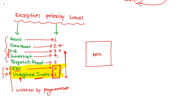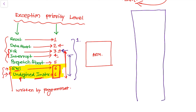Similarly, if FIQ occurs — which is priority 3 — if exceptions at priorities 3, 4, 5, and 6 occur simultaneously, the processor will serve priority 3 first. If every exception occurs simultaneously, the processor will serve the one with the highest priority first. When an exception occurs, the processor jumps to a memory address known as the vector table, which is defined for each exception.